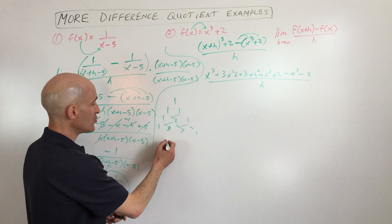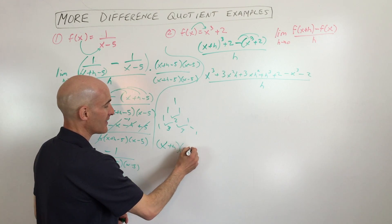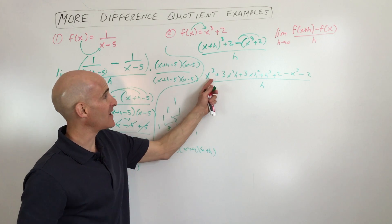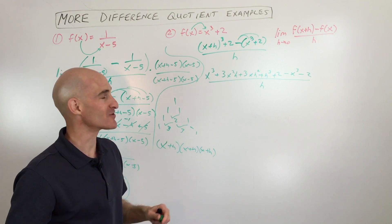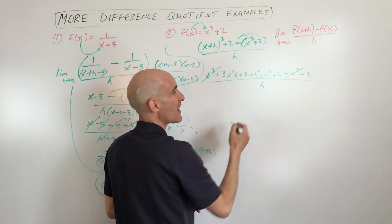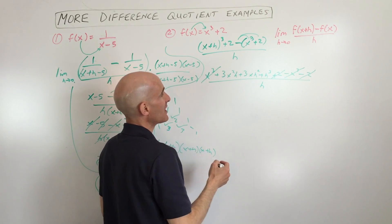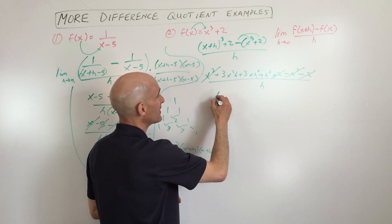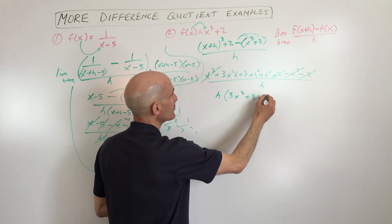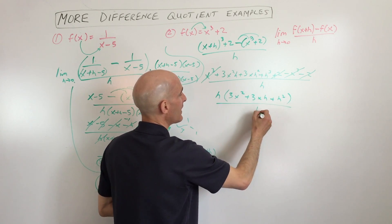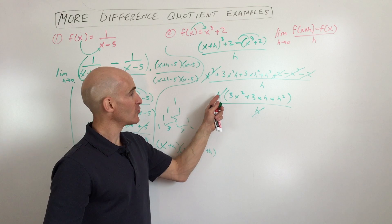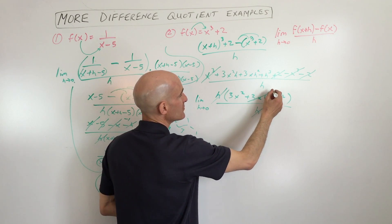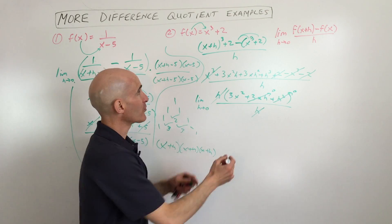Now we're just going to simplify. The x cubed terms cancel because one's positive and one's negative. The 2 and negative 2 cancel. Notice how each remaining term has an h in it, so we're going to factor that h out. This gives us h times (3x squared plus 3xh plus h squared), all divided by h. The h's cancel in numerator and denominator. Now, it's the limit as h approaches 0 — if we put 0 in for h, the 3xh term becomes 0 and the h squared term becomes 0, and we're left with 3x squared.